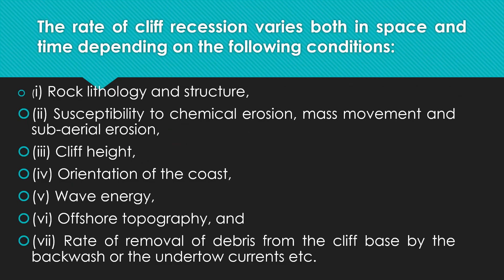Cliff recession depends on the lithology and structure of the rock — its physical properties. Weak rocks show greater recession while hard rocks are more resistant. Susceptibility to chemical erosion, mass movement, and sub-aerial erosion also determines cliff recession. Strong rocks withstand erosion while weak rocks do not.